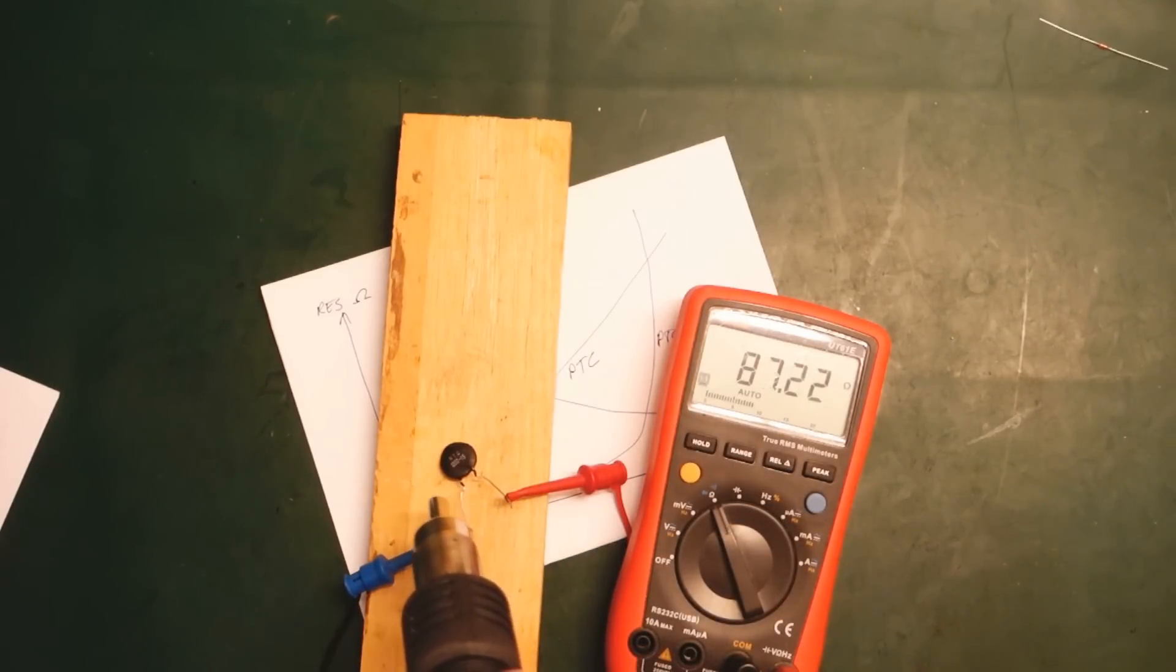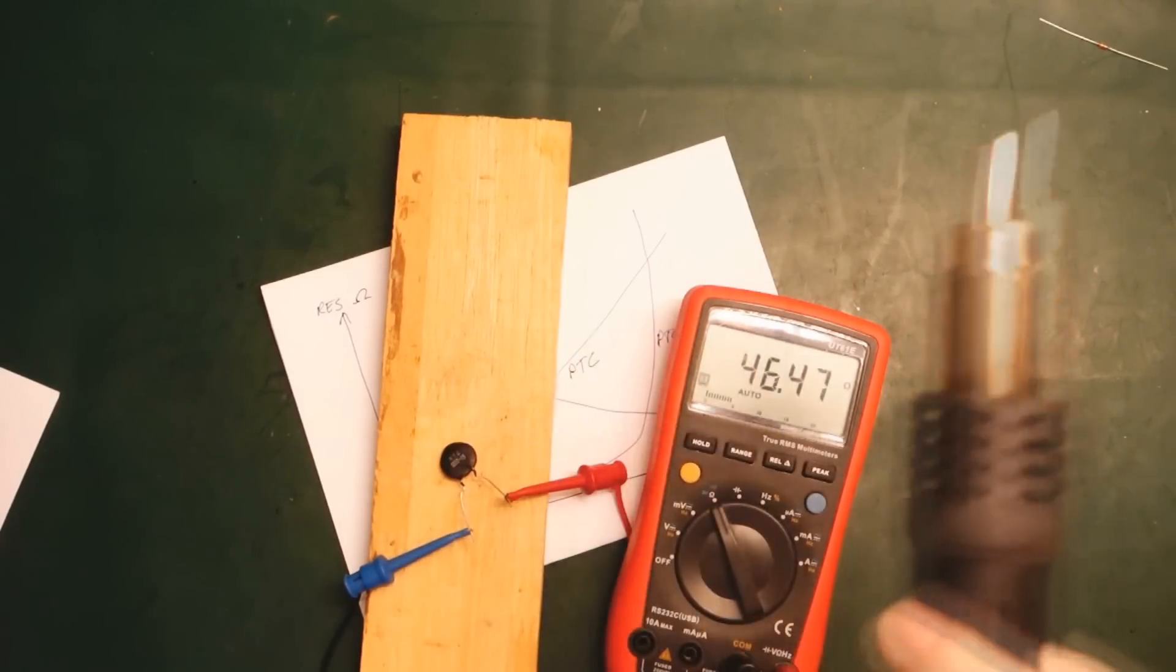100 degrees. You can see here as I heat it up the resistance goes down quite drastically. This one will end up something like half an ohm I think at about 100 degrees Celsius, something like that. So that's how it works.